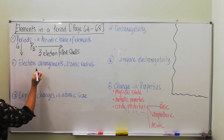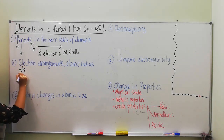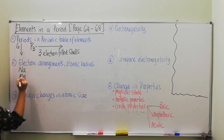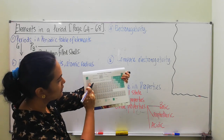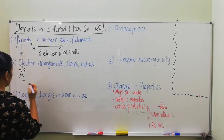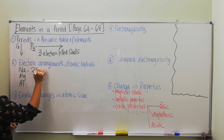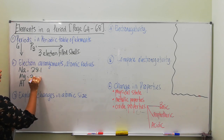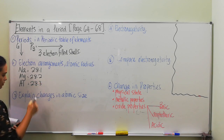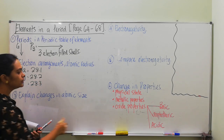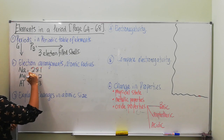For instance, the electron arrangement for sodium is 2.8.1, magnesium is 2.8.2, and aluminium is 2.8.3. You can see that they all have 3 electron filled shells.